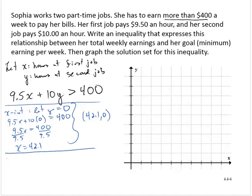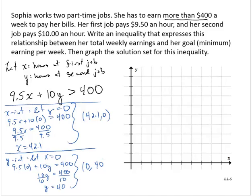So then we have an x-intercept of 42.1 comma 0. And let's find the y-intercept by letting x equals 0. So then I'd have 9.5 times 0 plus 10y equals 400. So 10y equals 400, and dividing through by 10, y equals 40. So that gives me the ordered pair 0, 40.